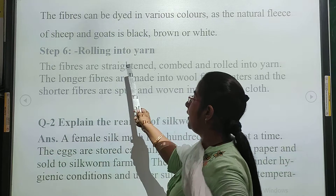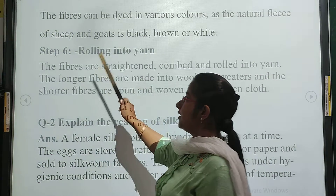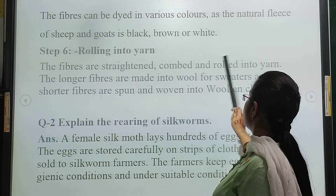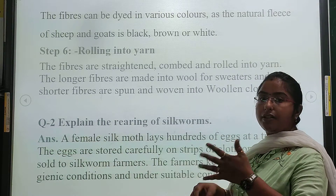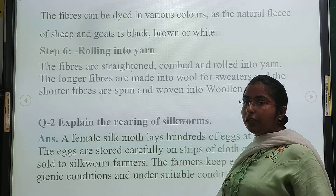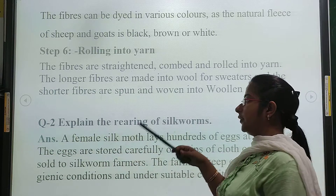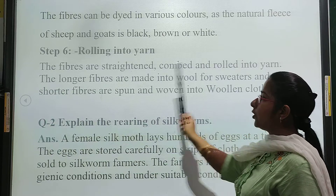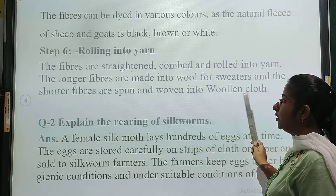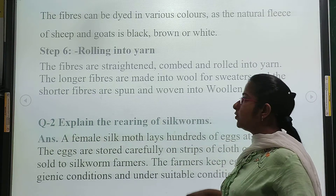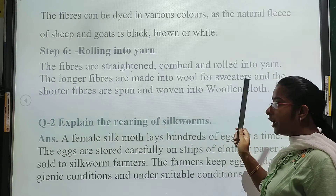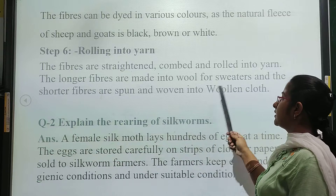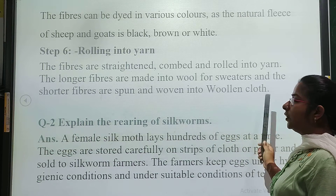Step 6 is rolling into yarn. The fibers are straightened and rolled into yarn. We can comb them and make yarns. The longer fibers are used to make worsted yarn and the shorter fibers are used to make woolen yarn.